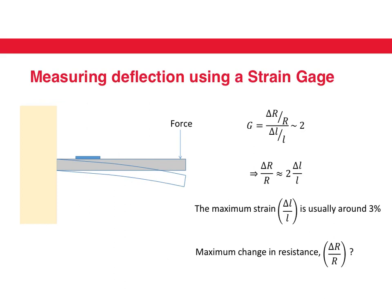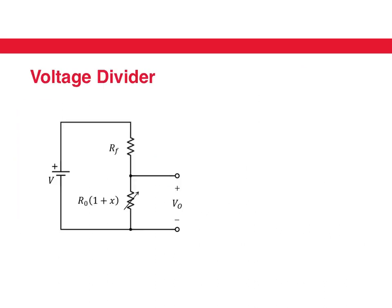And if the maximum strain that a strain gauge can take is approximately 3%, what is the maximum change in resistance that you can expect? If you put that through this equation, you get the maximum ΔR/R to be around 6%. So let's take the strain gauge and put it in a voltage divider and see what happens.